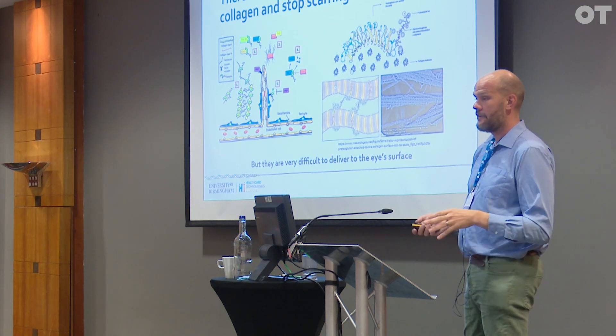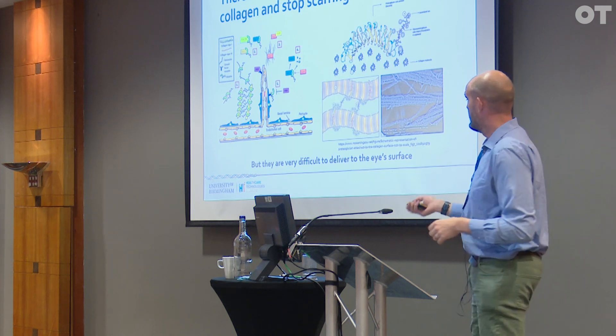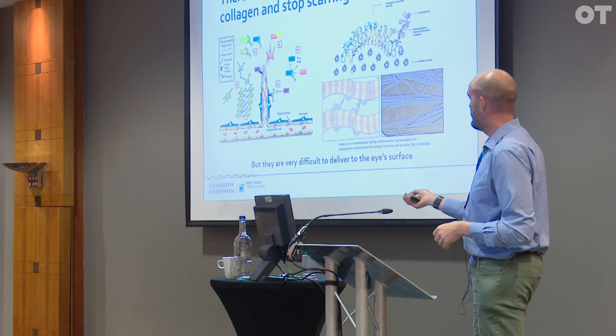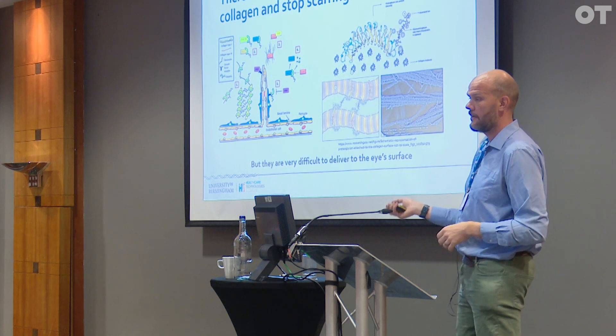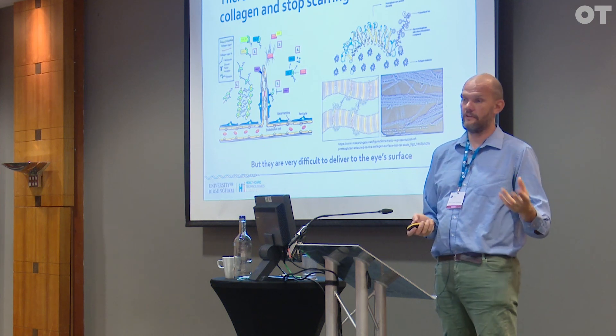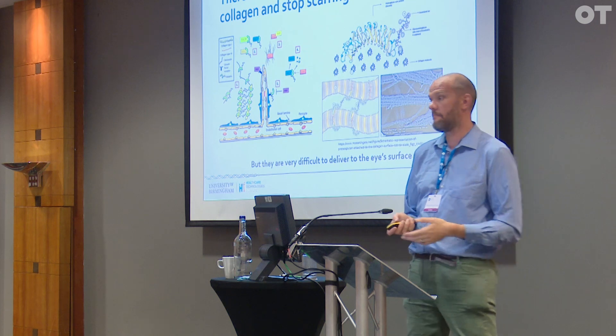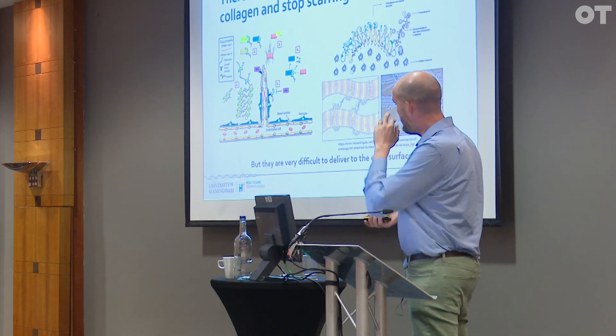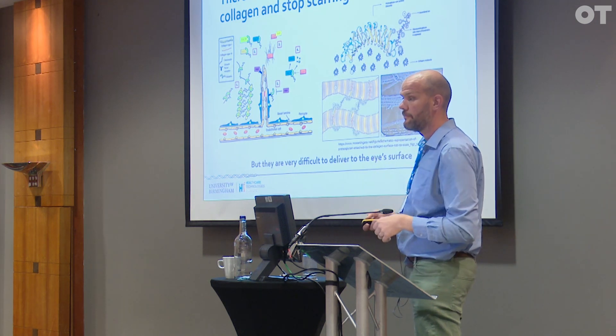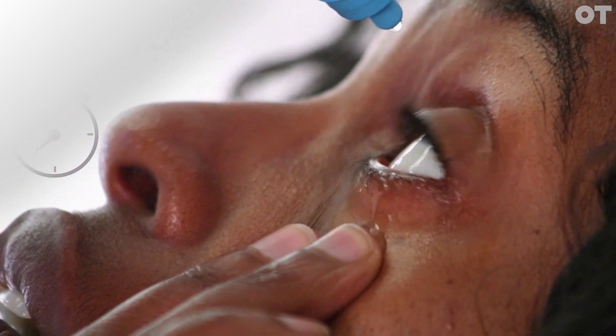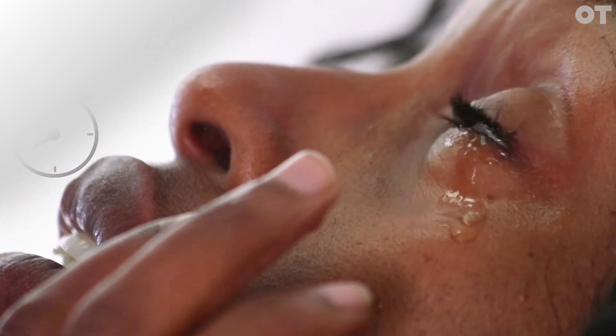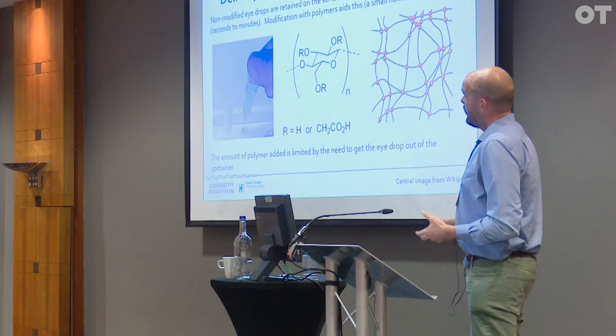Now there's a couple of issues with Decorin. The first one is that they're very difficult to deliver to the eye surface. When it's delivered as a PBS drop, it's only retained for a very short period of time. This is particularly problematic because of the cost of the molecule. If you're blinking the majority of that away, then that is a lot of wasted therapeutic and makes the therapy financially unviable.